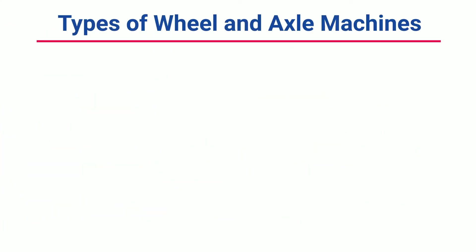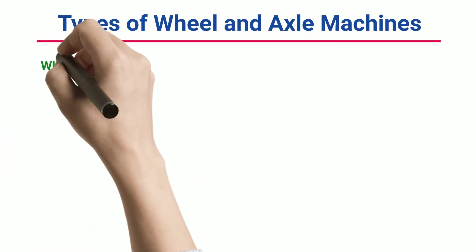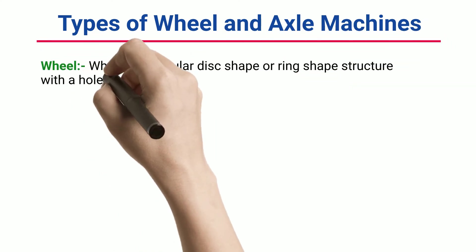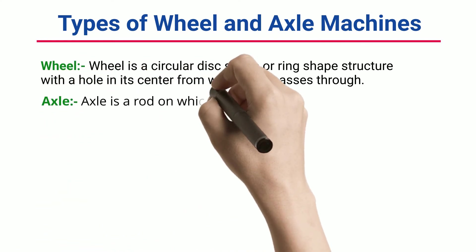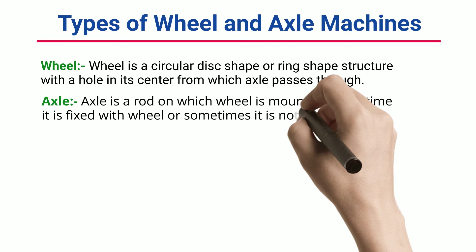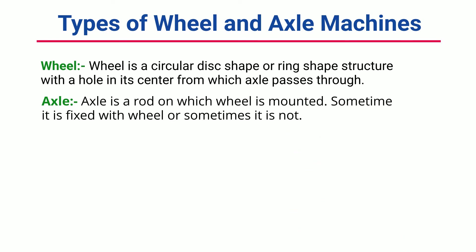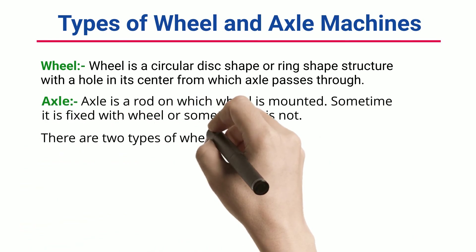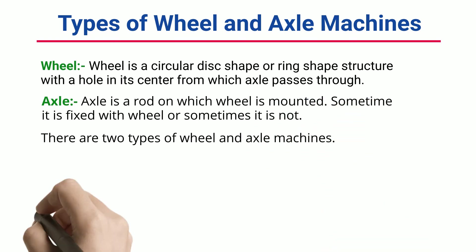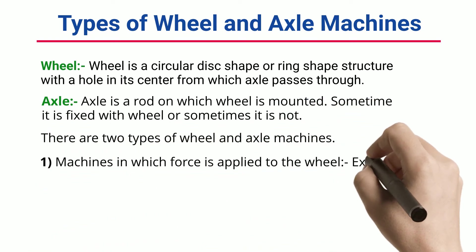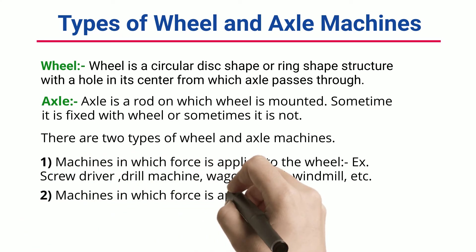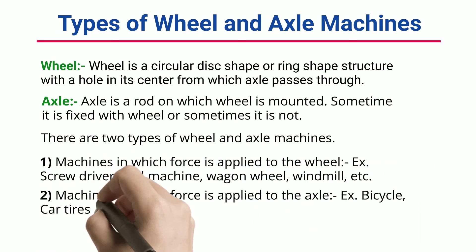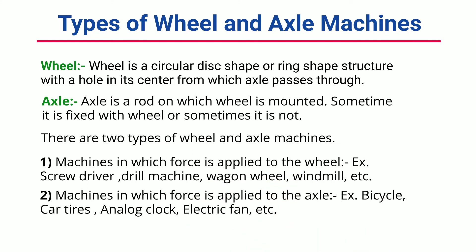Types of Wheel and Axle Machines. A wheel is a circular disc-shaped or ring-shaped structure with a hole in its center through which an axle passes. An axle is a rod on which the wheel is mounted — sometimes it is fixed with the wheel and sometimes it is not. There are two types of wheel and axle machines: (1) Machines in which force is applied to the wheel, e.g., screwdriver, drill machine, wagon wheel, windmill, etc. (2) Machines in which force is applied to the axle, e.g., bicycle, car tires, analog clock, electric fan, etc.